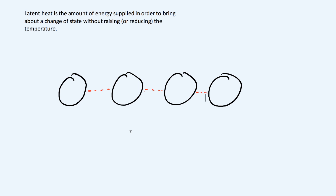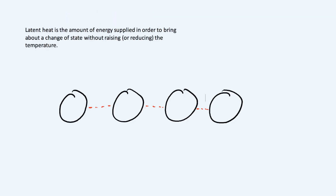So whether going from solid to liquid, liquid to gas, gas to liquid, or liquid to solid, you have latent heat at each one of those stages. It's just whether the heat energy is released or taken in to break the bonds.